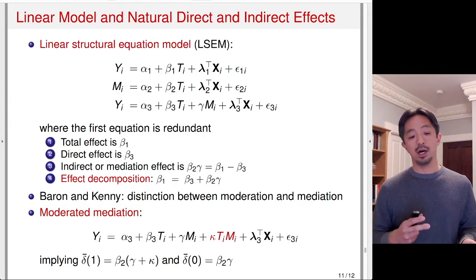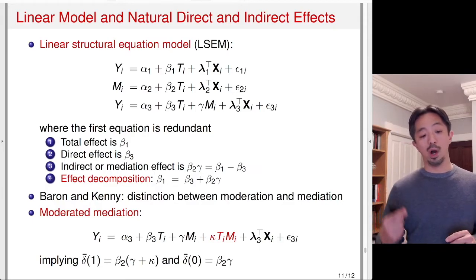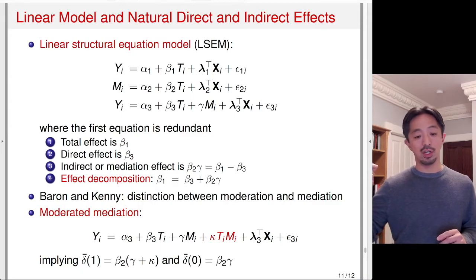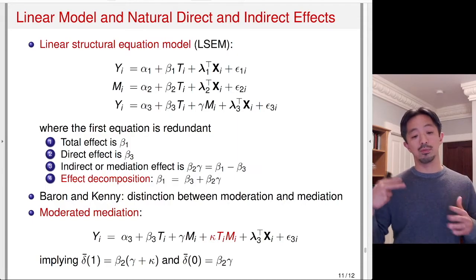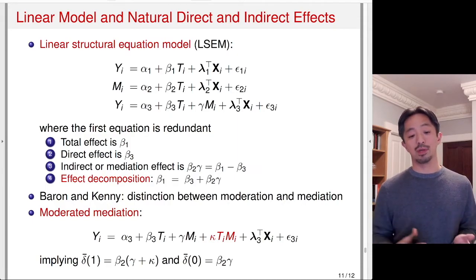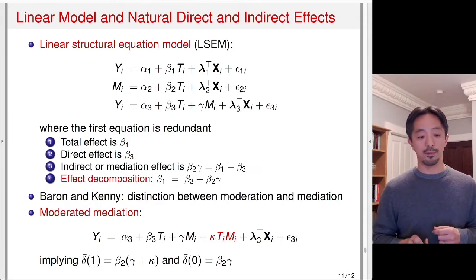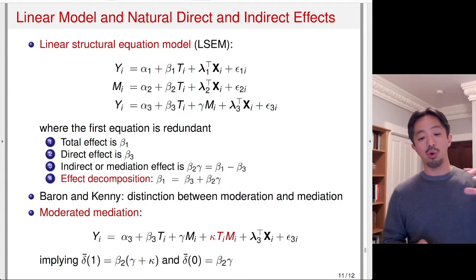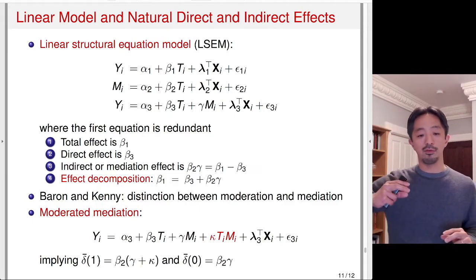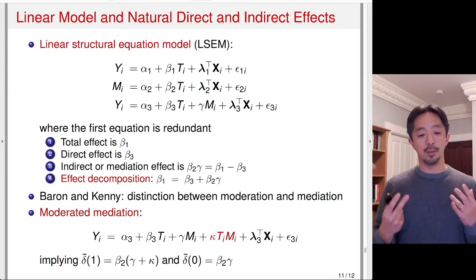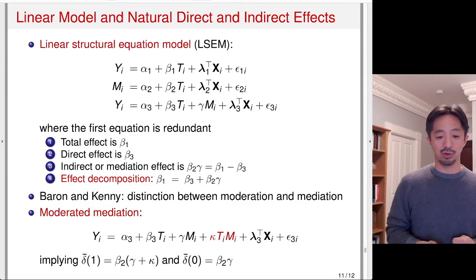There are two types of natural indirect effect. One is the indirect effect when the mediator is considered with the treatment set to one, versus the indirect effect when the treatment is set to zero. Those two effects may not be the same if the treatment and mediator interact with one another. So it matters whether you're holding the treatment constant at one or zero when you change the mediator from M(0) to M(1) — those two scenarios may give you different natural indirect effects.